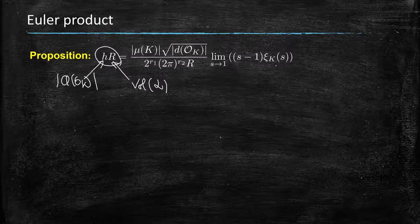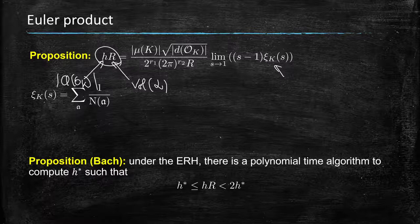...so this is the Dedekind zeta function, and so we know how to anticipate the value through an Euler product, so this will be given by a product of infinitely many terms, and we know how to find an approximation.